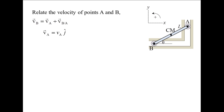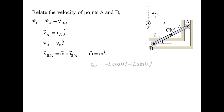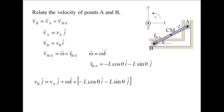Point A moves in the y-direction at a rate of negative 2 meters per second. The velocity of point B is unknown, but we know that point B is restricted to move in the x-direction. The relative velocity term is omega cross RBA, the position vector pointing from point A toward point B. The angular velocity vector has the magnitude of omega and points in the z-direction. RBA starts at point A and terminates at point B. Point B is located a distance L times cosine theta to the left and L times sine theta downward from point A.